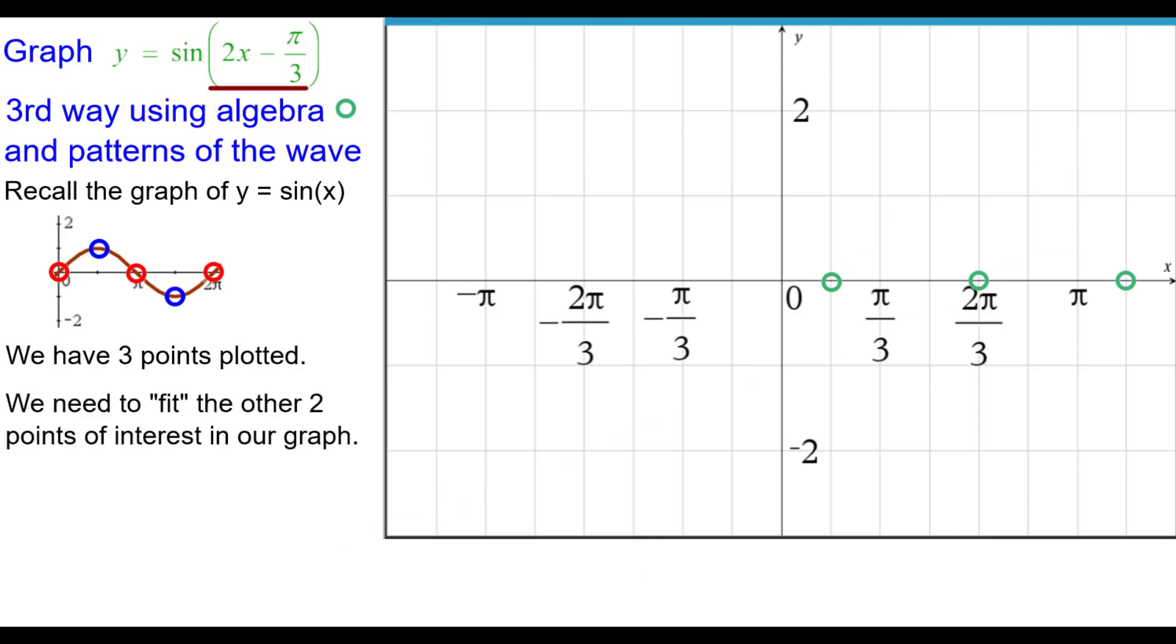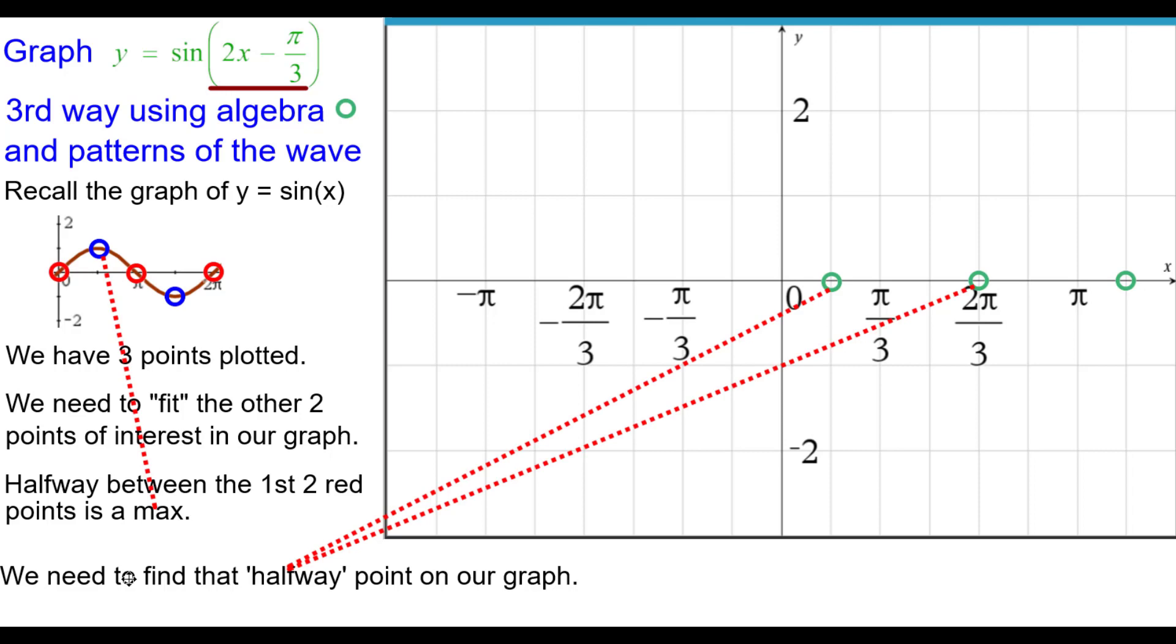So we have three points plotted. We now have to fit the other two. This one is halfway between these two first red points, these points of inflection. It's a max. So I'm going to go halfway between these two points and get our maximum right there. Its coordinates are 5 pi over 12 comma 1. So this point here maps to 5 pi over 12, 1.